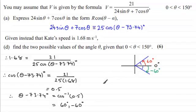So therefore, if I add 73.74 degrees to each of these answers, then I'm going to get theta equals, when we take the plus 60 degrees, 133.74 degrees. And when I add 73.74 to the minus 60 degrees, I end up with 13.74 degrees.